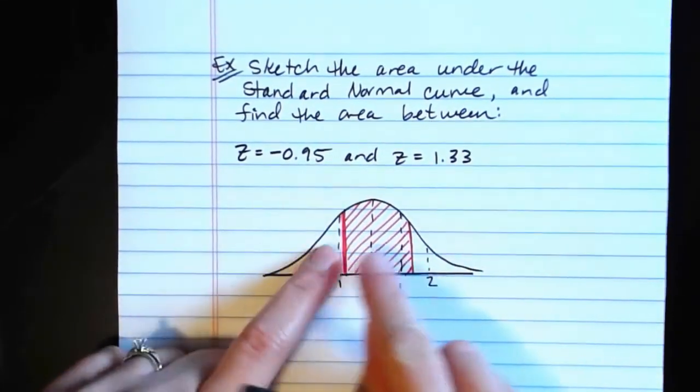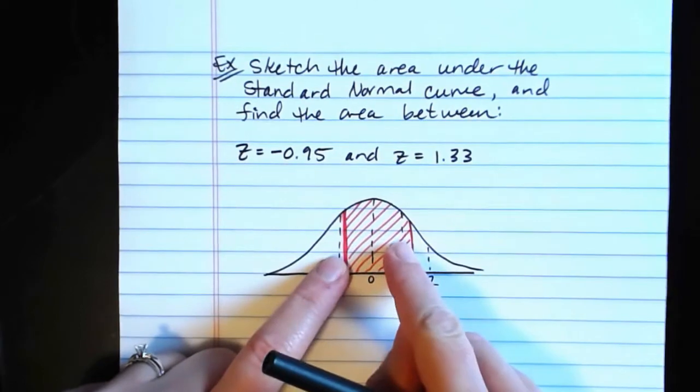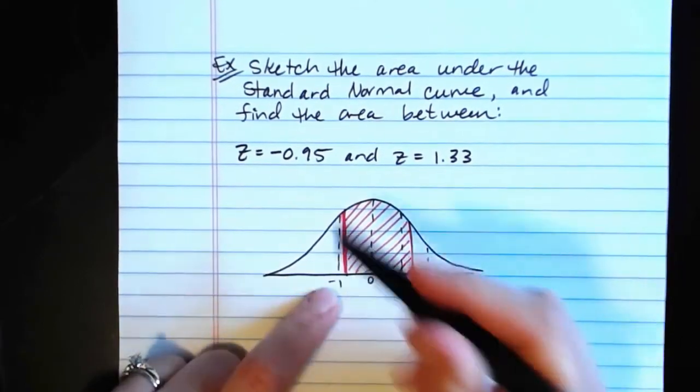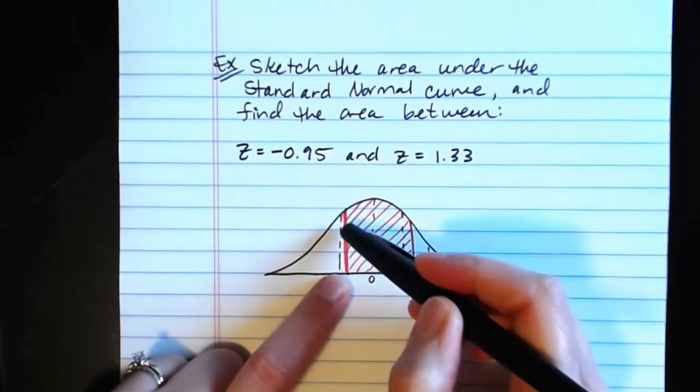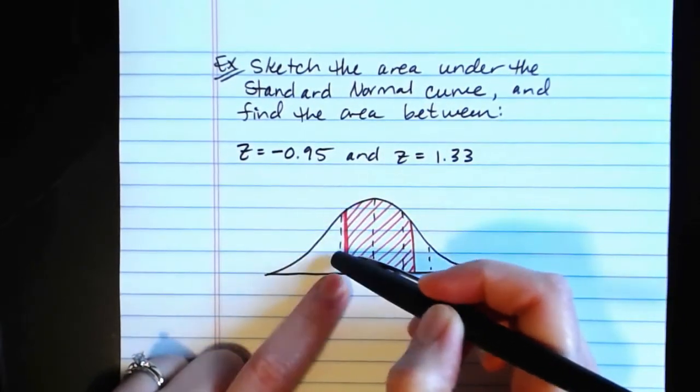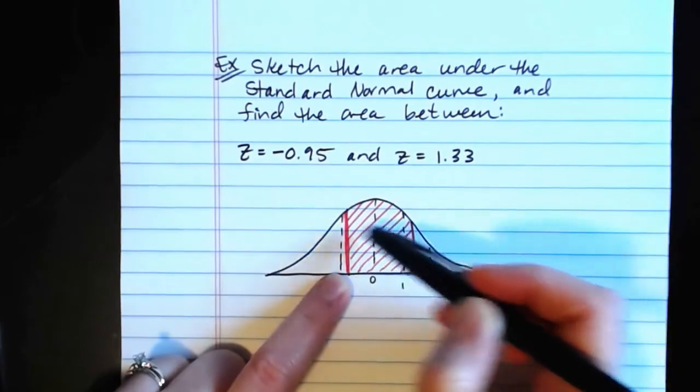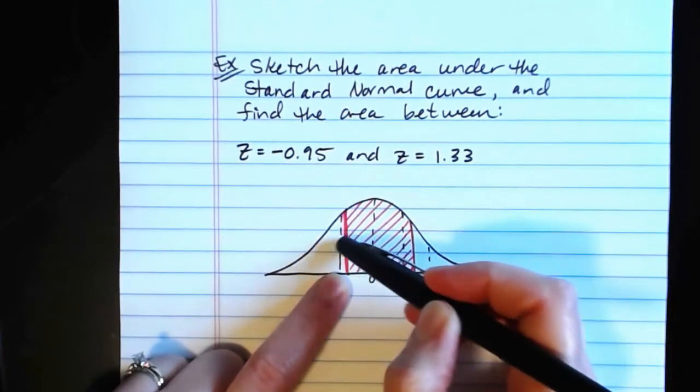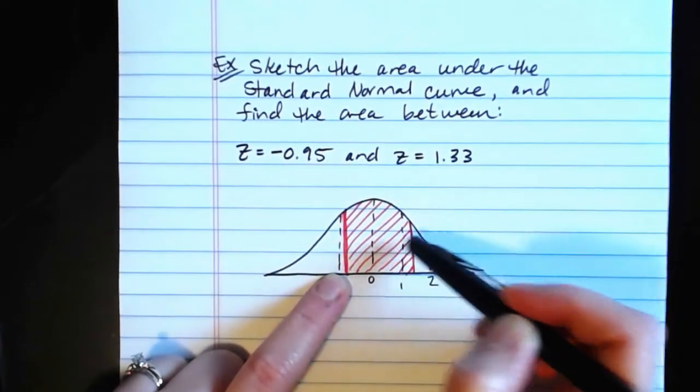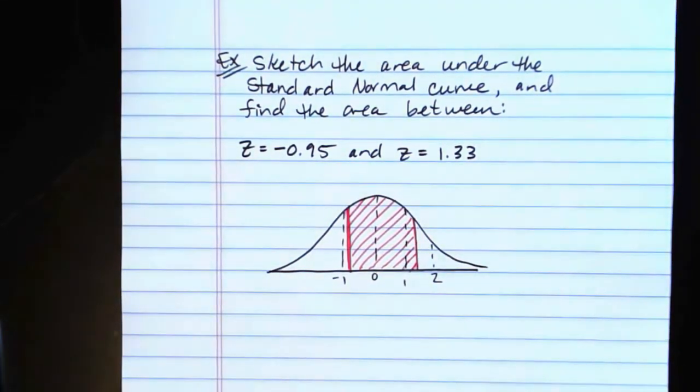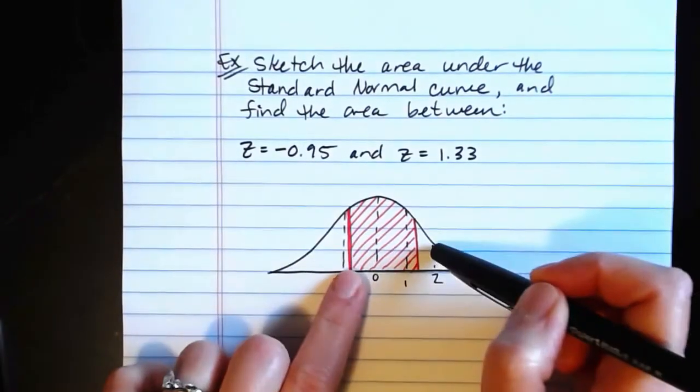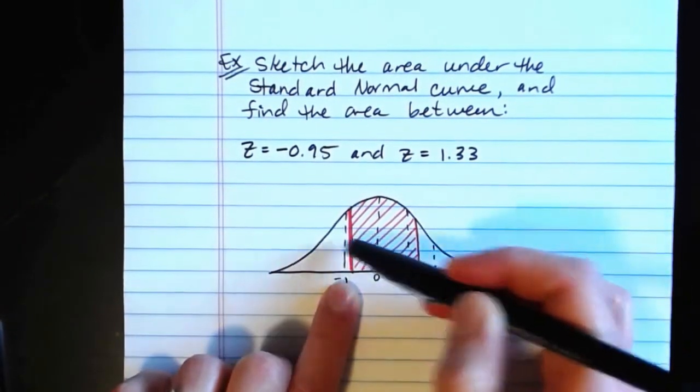Now, if we were to have gone just from negative 1 to 1, that would be 68%. But we didn't go all the way out to negative 1 here, and we went a little bit beyond 1 here. If we were to go from negative 1 all the way up to the positive 2, that would be the 68% that's in here plus the 13.5% that's between 1 and 2. And if you look at that, that would be 81.5% if we went from negative 1 all the way to positive 2.